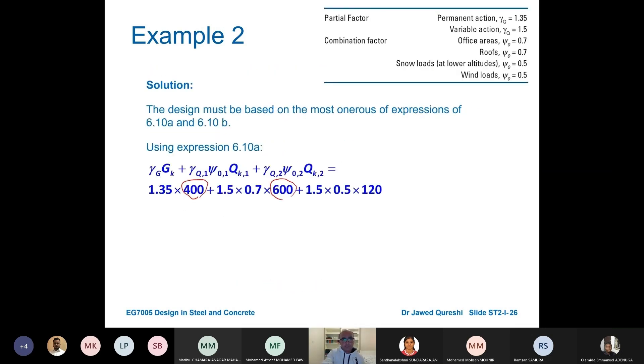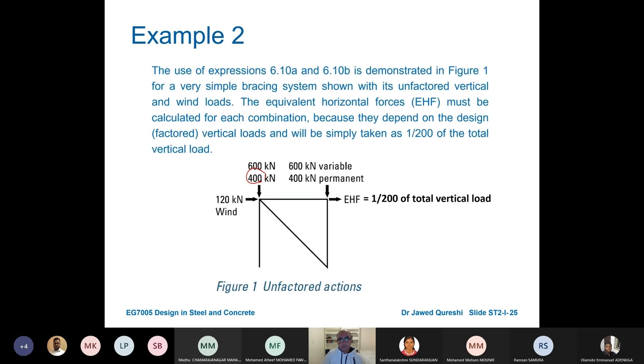1.35 into Gk is 400, vertical load is this one, and Qk again this is vertical load. The psi factor combination factor is 0.5 for offices. We are assuming here that vertical loads and wind load are acting simultaneously. So 6.10a has got these psi factors in both of the combination factors in both of the variable actions.